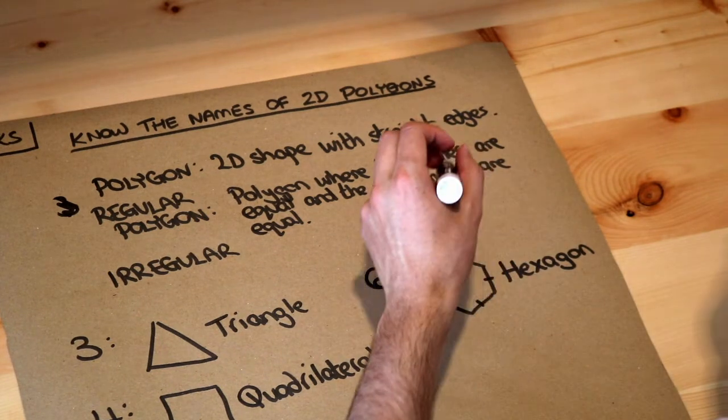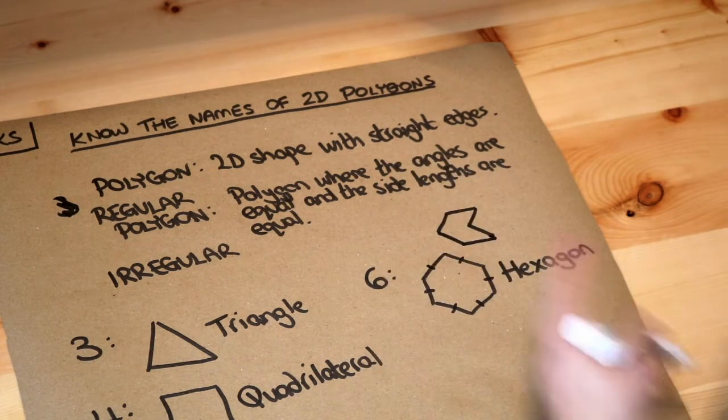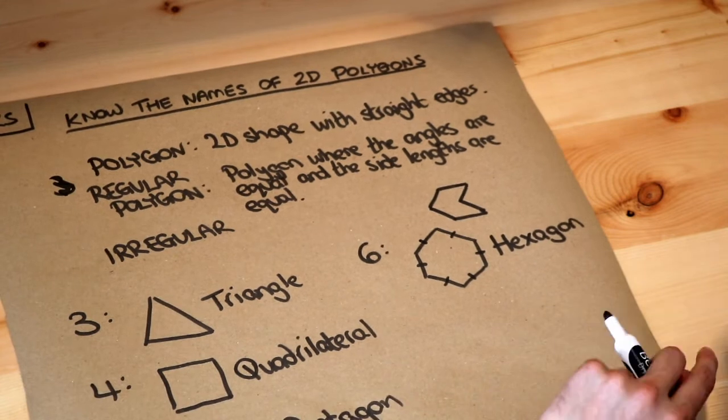But it could be an irregular hexagon so I might have something like this. And that would be a hexagon as well. It's not a regular hexagon but it's still a hexagon because it has six sides.